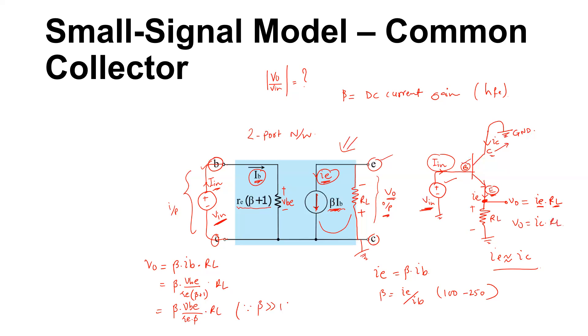This can further be simplified as Vo - the beta gets cancelled here - divided by Vbe is equal to RL divided by re. Then you have Vo divided by Vin, take a mod of it. And remember, Vbe is nothing but your voltage source that you apply, and the gain is given by the ratio of RL over re.